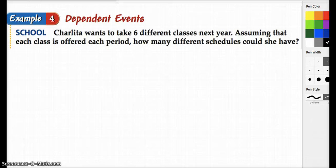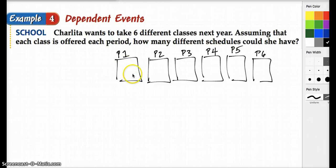All right, so Charlita wants to take six different classes next year. Assuming that each class is offered each period, how many different schedules could she have? So now this is a little bit different. Six different classes, six different periods are going to require us to kind of think about what the context of our situation is. So if the first period choice, she has six different classes that she can choose for first period, that would be six. But then for her second period choice, she only has five more classes left. Does that make sense?